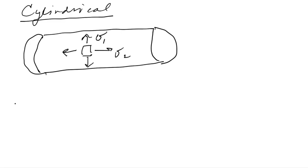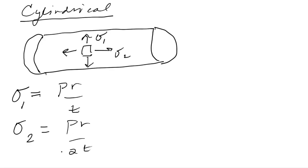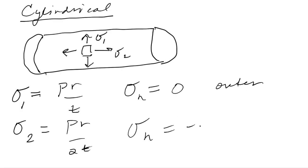From simple statics, σ1 = Pr/t and σ2 = Pr/2t. So σ1 is twice what we had for the spherical case, while σ2 is the same as the spherical case. For the surface conditions: σ_n = 0 on the outer surface and σ_n = −P on the inner surface. Again, we have biaxial (plane) stress on the outer surface and triaxial stress on the inner surface, and you can use Mohr's circle to determine the maximum and minimum stresses.